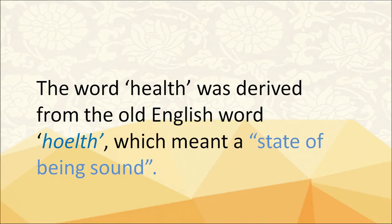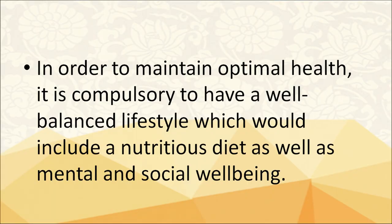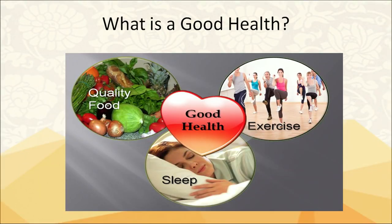Let's discuss the origin of the word health. The word health was derived from the old English word 'health' which meant a state of being sound. In order to maintain optimal health, it is compulsory to have a well-balanced lifestyle which includes a nutritious diet as well as mental and social well-being. As shown in this picture, one should exercise daily, have a sound sleep, and have good quality food which includes green vegetables.